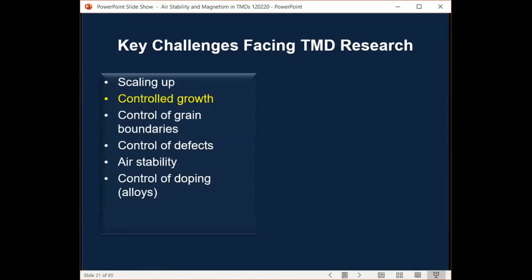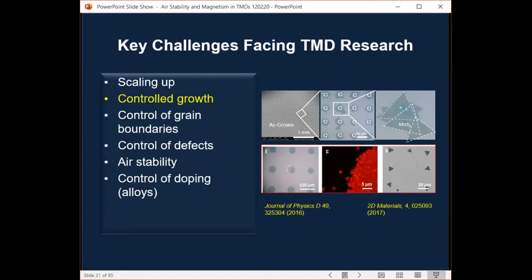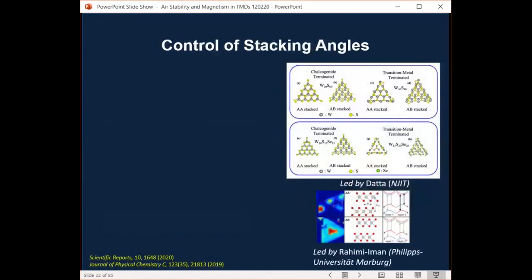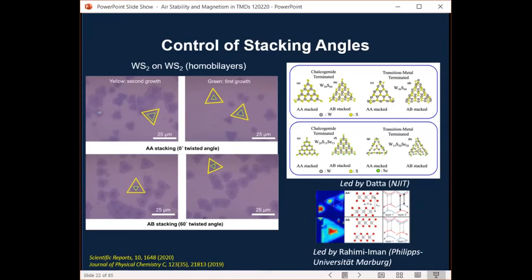And there are a number of challenges facing the TMD research beyond the scalable synthesis, including controlled growth, control of grain boundaries, defects, air stability, and control of doping to make dilute 2D materials here. My group has pursued the controlled growth a little bit, maybe half success, including location specific growth, where we showed a selective growth of TMD monolayers on desired locations without post lithography. And we studied the stability of the CVD growth of tungsten sulfide bilayers. This study was led by my theory collaborator, DATA at NJIT. In this DFT modeling, we studied two tungsten-based chalcogenides. The results show that the preference of forming the chalcogenide terminated structures over the metal-terminated structures for bilayers. Well, in fact, in my group, we were rather interested in learning the growth mode and mechanism of forming AA or AB stacking of those homo bilayers through experiments and modeling. And we haven't got them yet.